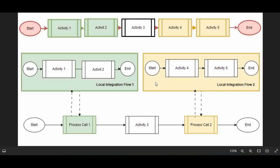The second picture shows grouping activity 1 and activity 2 into one portion and putting them in one local iflow. Same way, activity 4 and activity 5 go into another local integration flow. So in the same iflow you have a main section and two local sections. The main iflow will then look like the third picture: a start, then a palette called Process Call which calls one of your local integration flows, and another Process Call for the second local integration flow.